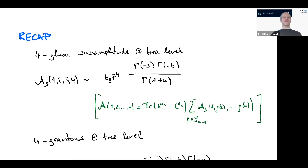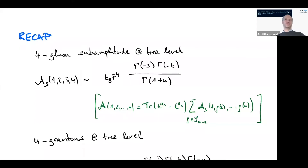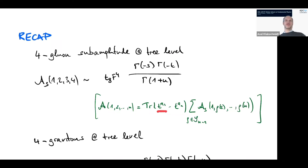Last time we were computing some tree-level string amplitudes in the open and closed superstring. For example, we looked at the four-point amplitude in the open superstring, where the massless states consist of gluons or gauge bosons. There was a formula involving the gauge color generators, the T^A operators of the gauge group. Since it's an open string at tree level, the operators sit on the boundary of the disk, and there is a cyclic order on that boundary.